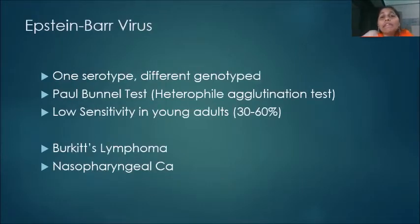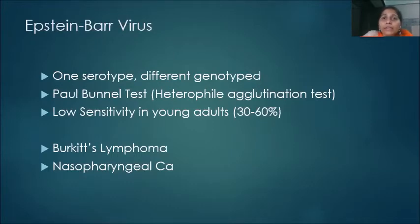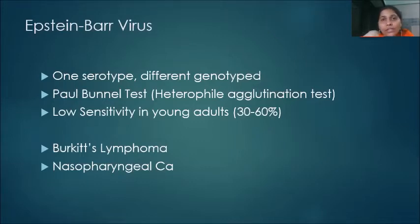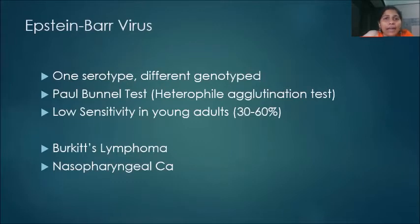Epstein-Barr virus has only one serotype but may have different genotypes. If you do nucleic acid study or PCR, you will find different genotypes of EBV, but all of them produce a single type of antibody which is cross-reactive. The age-old Paul Bunnell test is a heterophile agglutination test where antibodies are cross-reactive with guinea pig kidney and sheep RBCs. However, it is not a practical test — it takes a long time and requires many reagents. We have better tests based on nucleic acid study or serology.